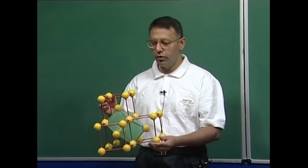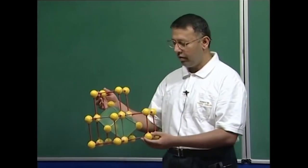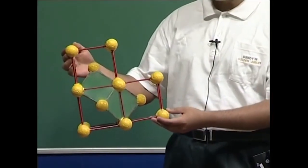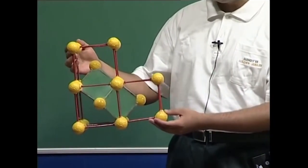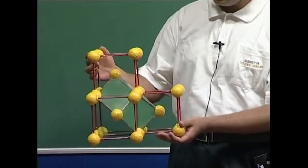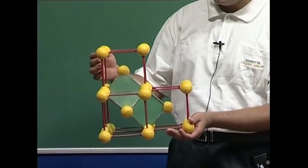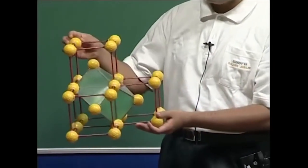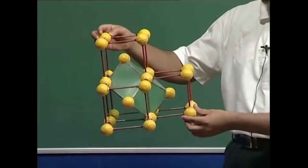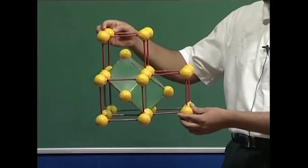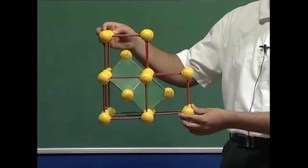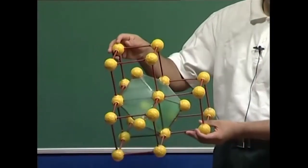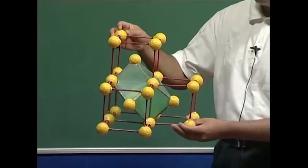To understand the primitive unit cell of the BCC structure, I have a model here and as you can see it is somewhat difficult to visualize the primitive unit cell of a BCC crystal. To understand this, you will have to visualize there are actually 1, 2, 3, 4 unit cells in this conventional representation, which are put together to actually generate the parallelepiped outlined in green here.